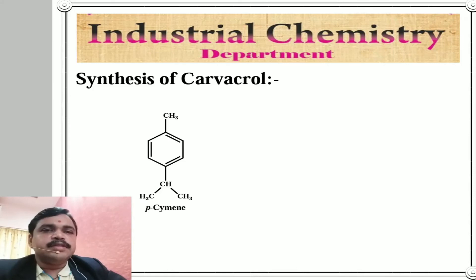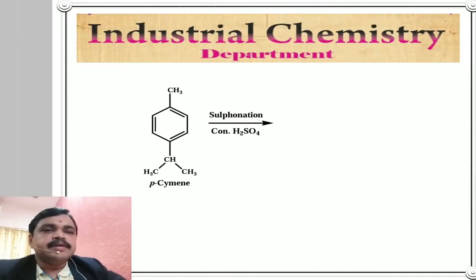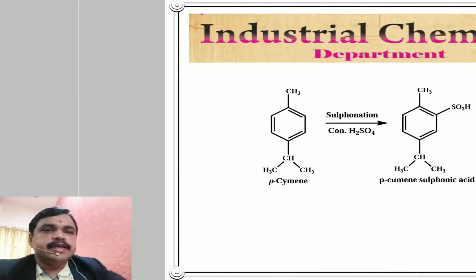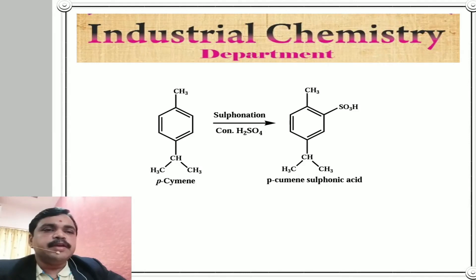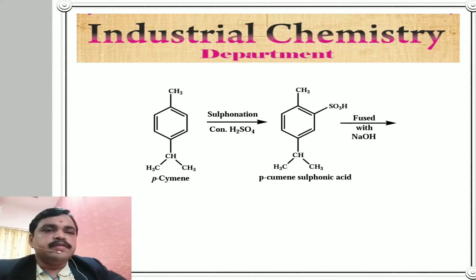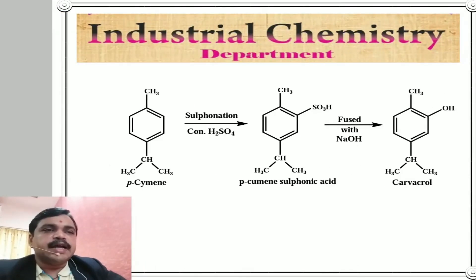The last synthesis of this lecture is Carvacrol. It is synthesized from paracymene. Paracymene is treated with concentrated sulfuric acid; sulfonation takes place and we get paracymene sulfonic acid. This paracymene sulfonic acid is then treated with fused sodium hydroxide. The SO₃H (sulfonic acid) group is converted into an OH (hydroxy) group, giving us Carvacrol.